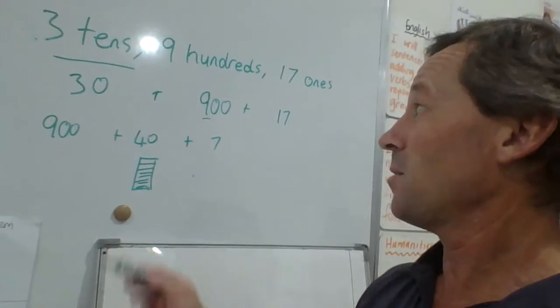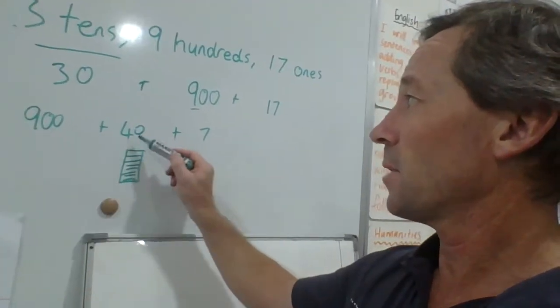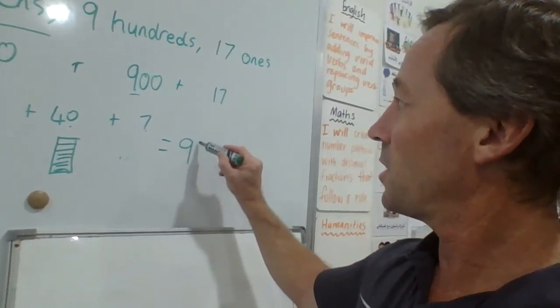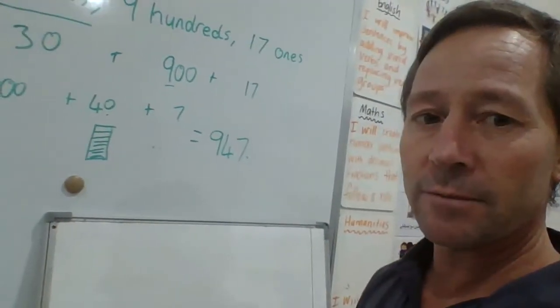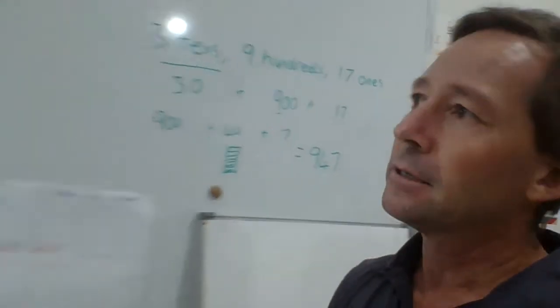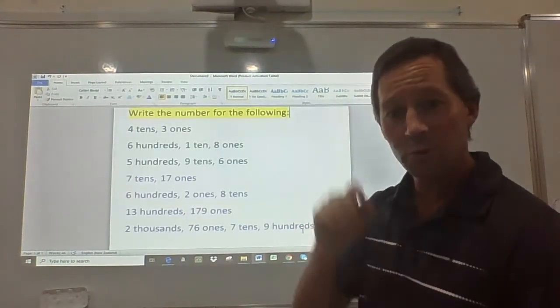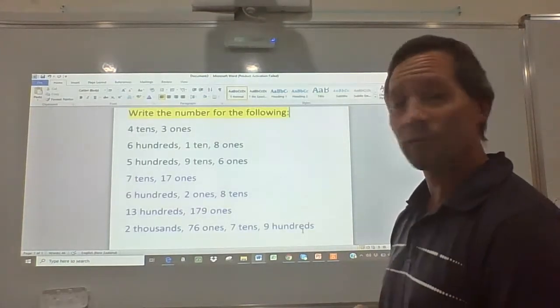Okay, so now I've got 900 plus 40 plus 7, which gives us 947. Genius! All right, this is your mission. Once I pause here, stop the video and see if you can solve those ones.